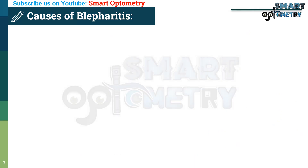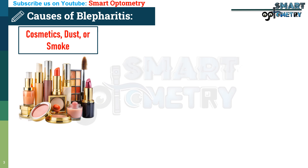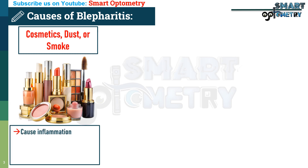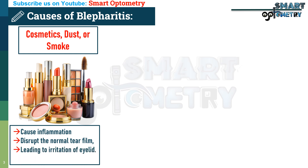Causes of blepharitis. First: cosmetics, dust, and smoke. These irritants cause inflammation and disrupt the normal tear film, leading to chronic irritation of the eyelid margins, which triggers blepharitis.